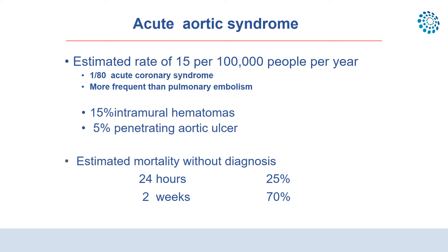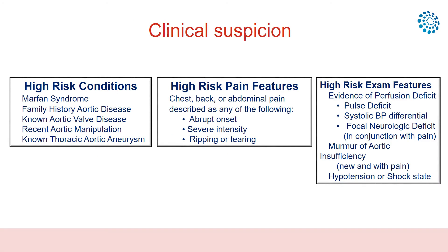However, undiagnosed Acute Aortic Syndrome carries a very high mortality rate — 25% within the first 24 hours and 70% within the first two weeks. Therefore, early diagnosis and treatment are crucial to decrease Acute Aortic Syndrome mortality.